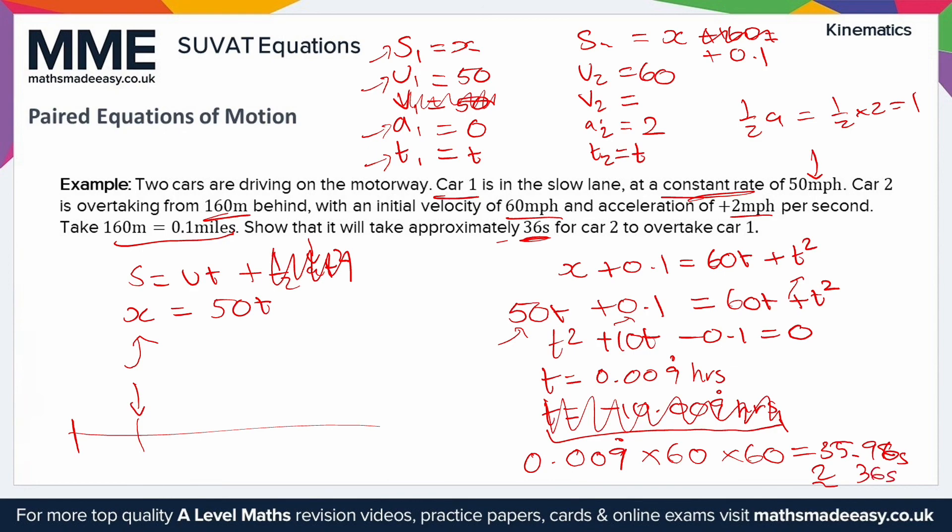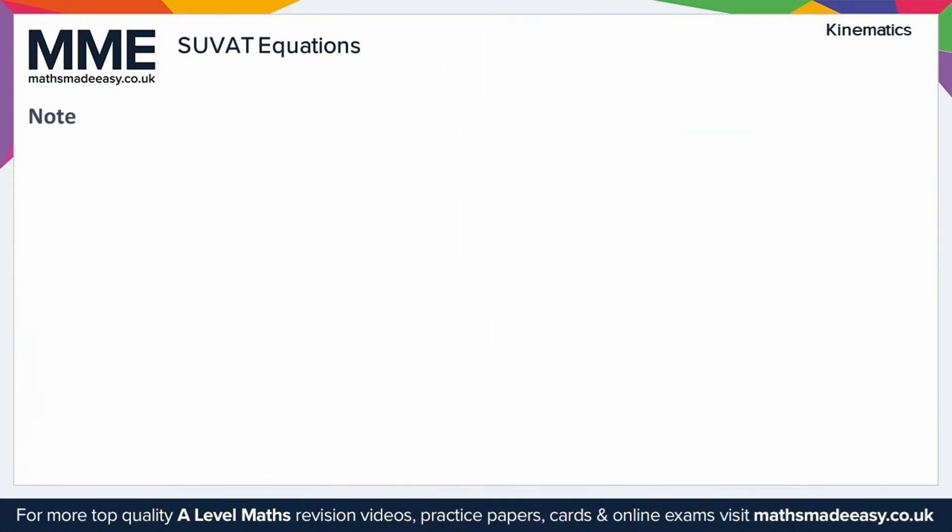An important thing to remember when working with SUVAT: if any question says that it's accelerating under gravity, so it might say A equals G, well this G is 9.8 meters per second squared. That's just the standard measure of gravity. Some questions will say take gravity as 10 meters per second squared. If you do physics you might do it as 9.81. In maths we just use one decimal place, 9.8.